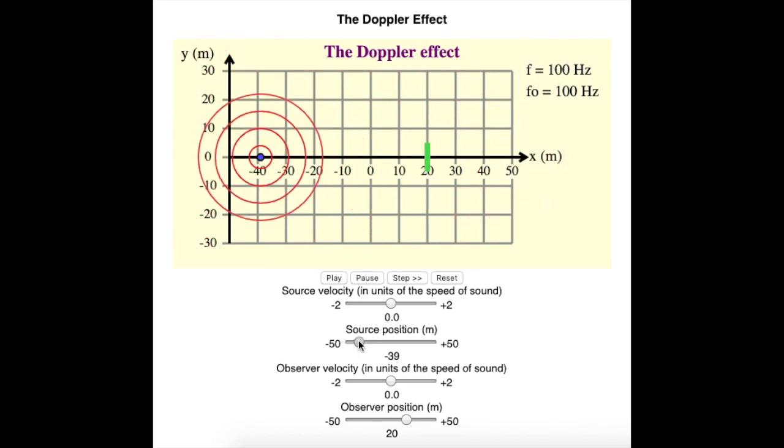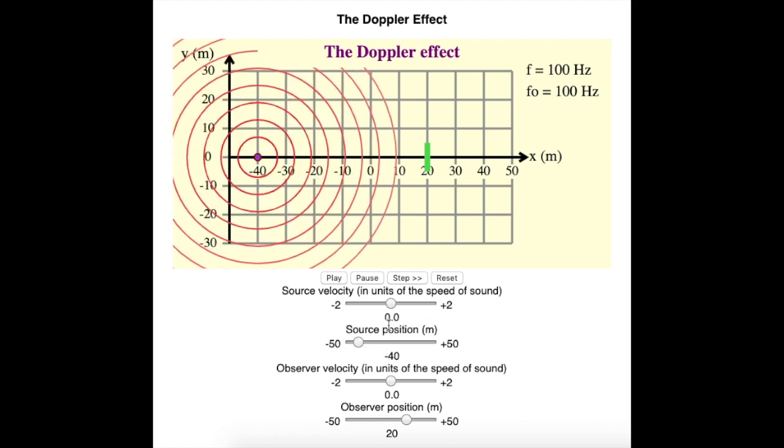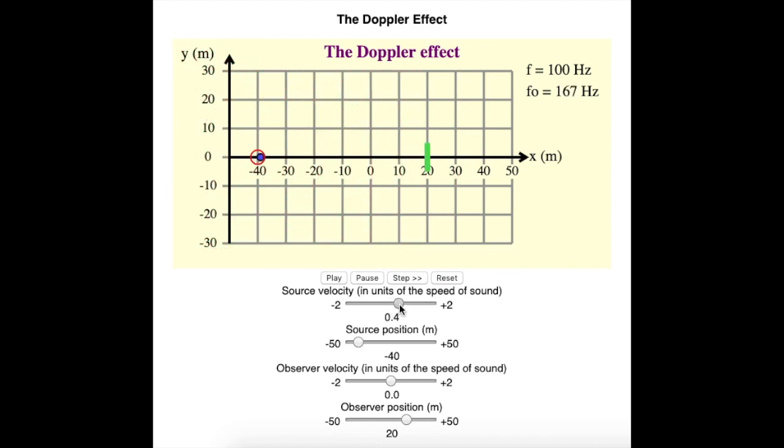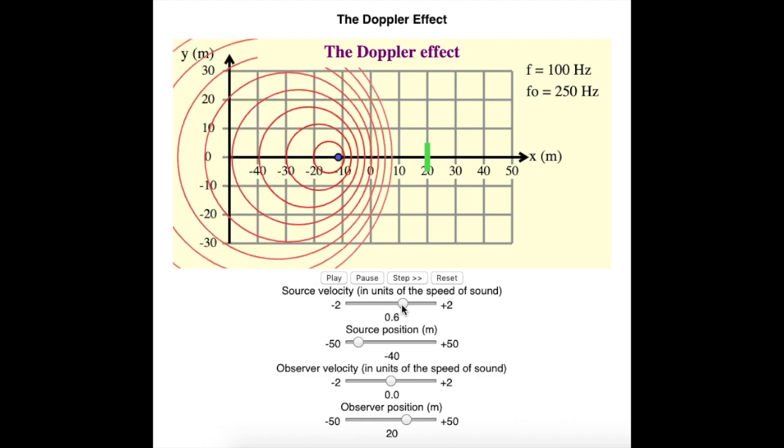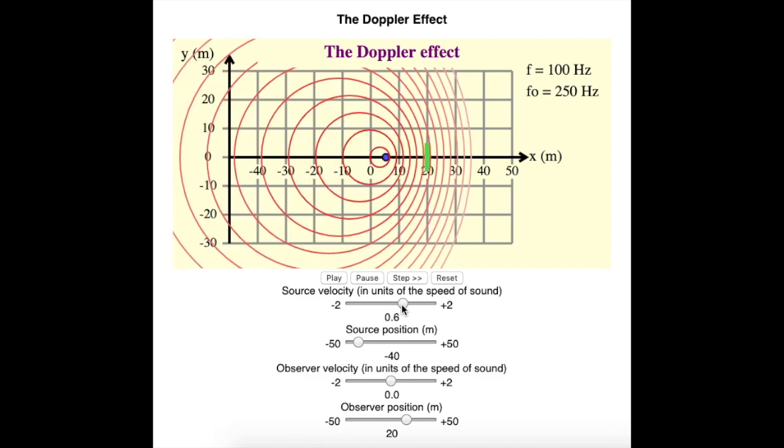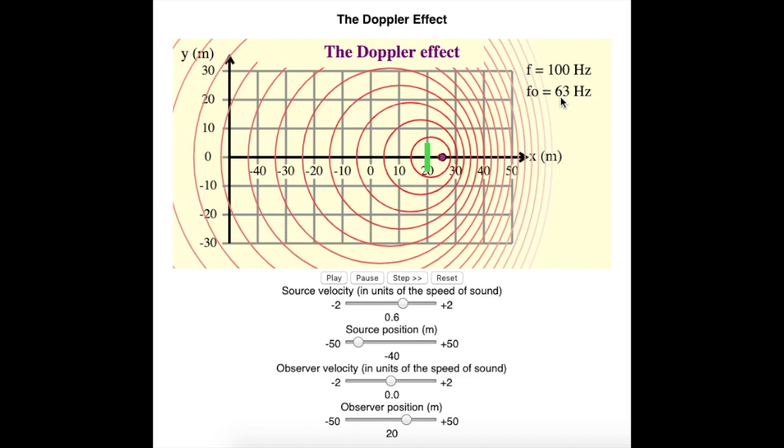Let's say I want to have the source moving toward the detector. The detector is the green bar. So I can set the source velocity as being positive. And now you see it's moving. As it's moving toward the detector, that's squishing the waves, and so the waves are going to be at a higher frequency received.